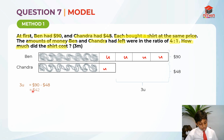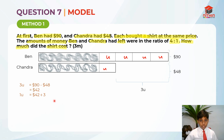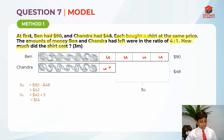The answer is $42. So 3 units is equal to $42. As I always say, when you have a certain number of units and you know their value, always find 1 unit. So 1 unit equals $42 divided by 3, which equals $14. Yes, 1 unit is $14.